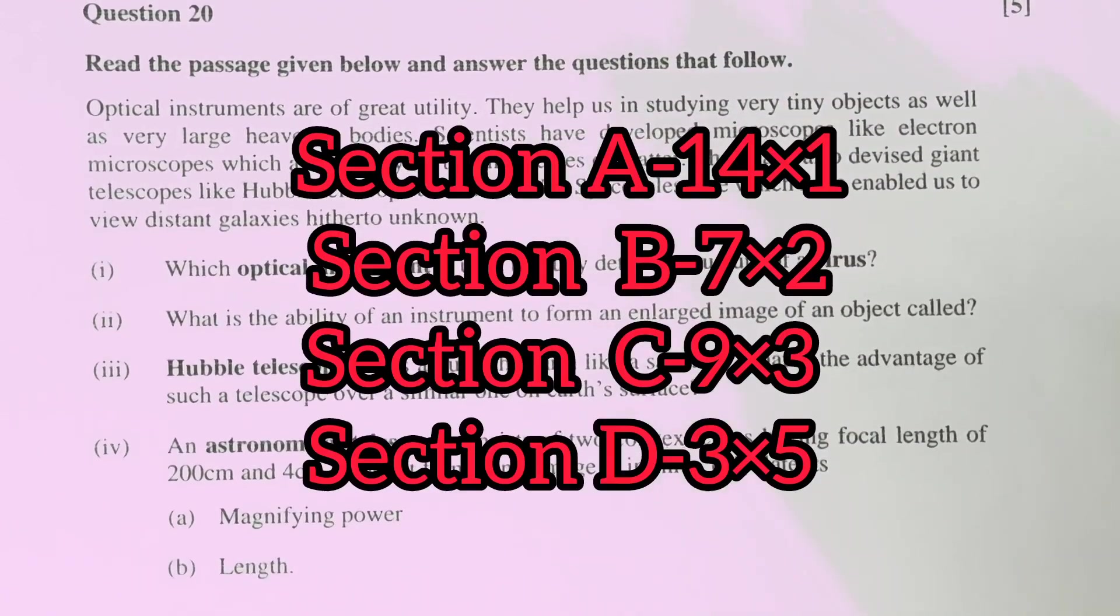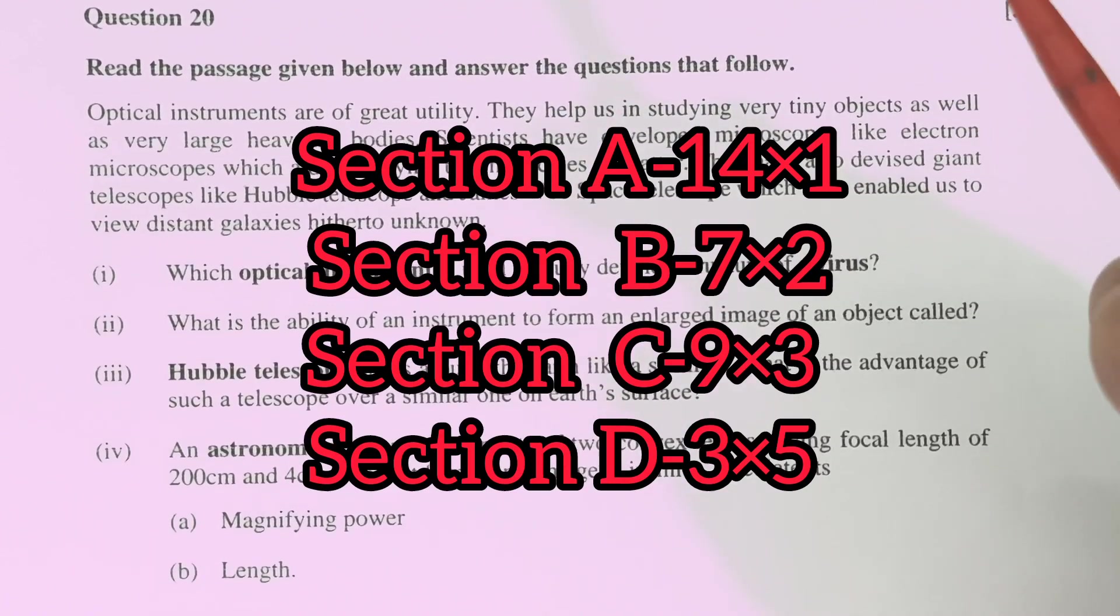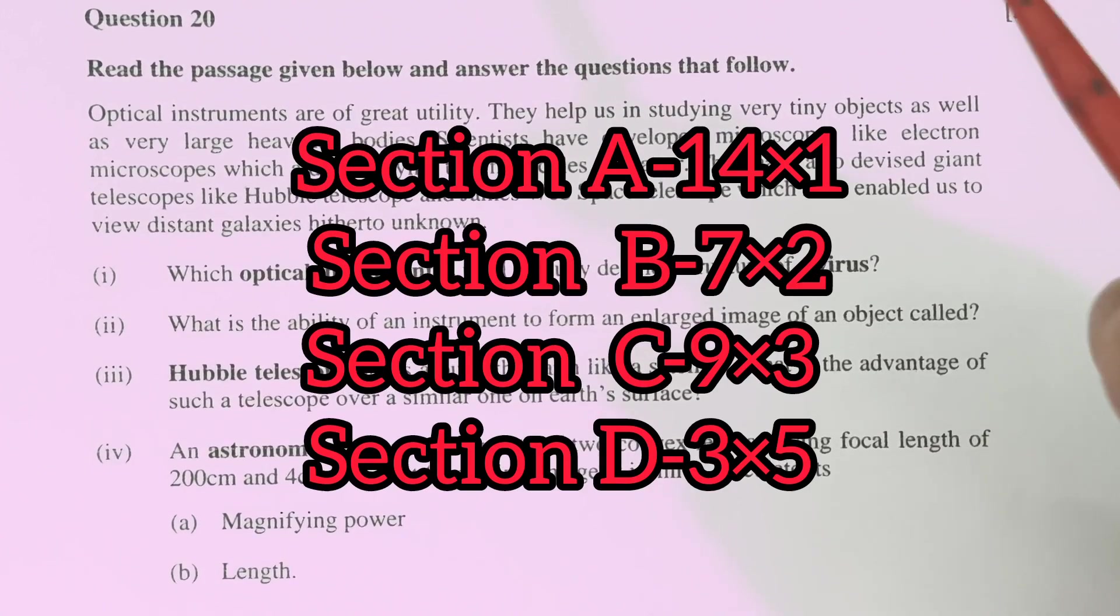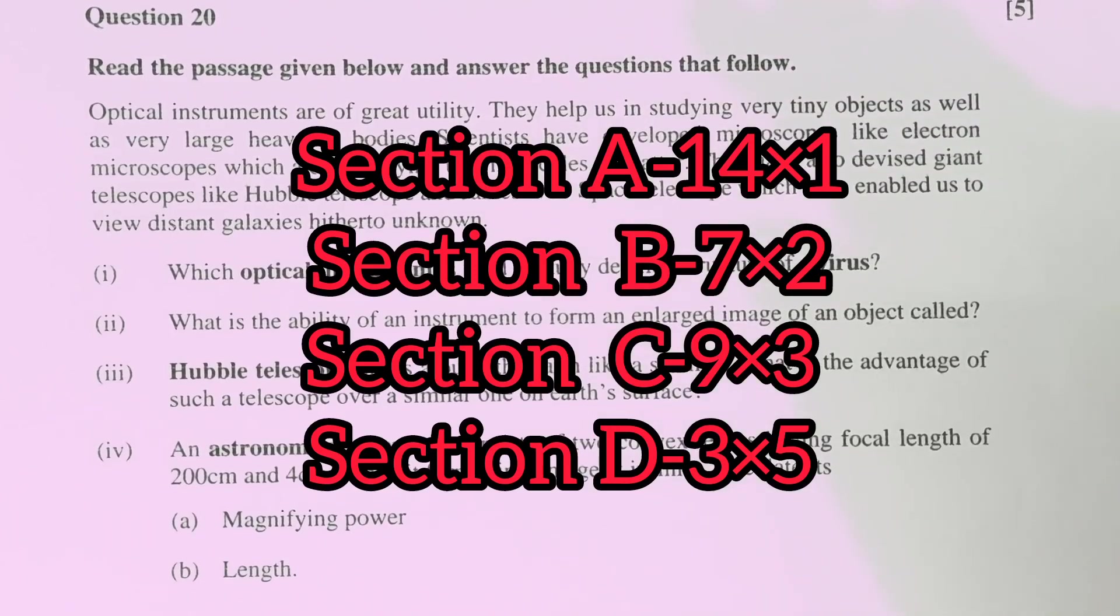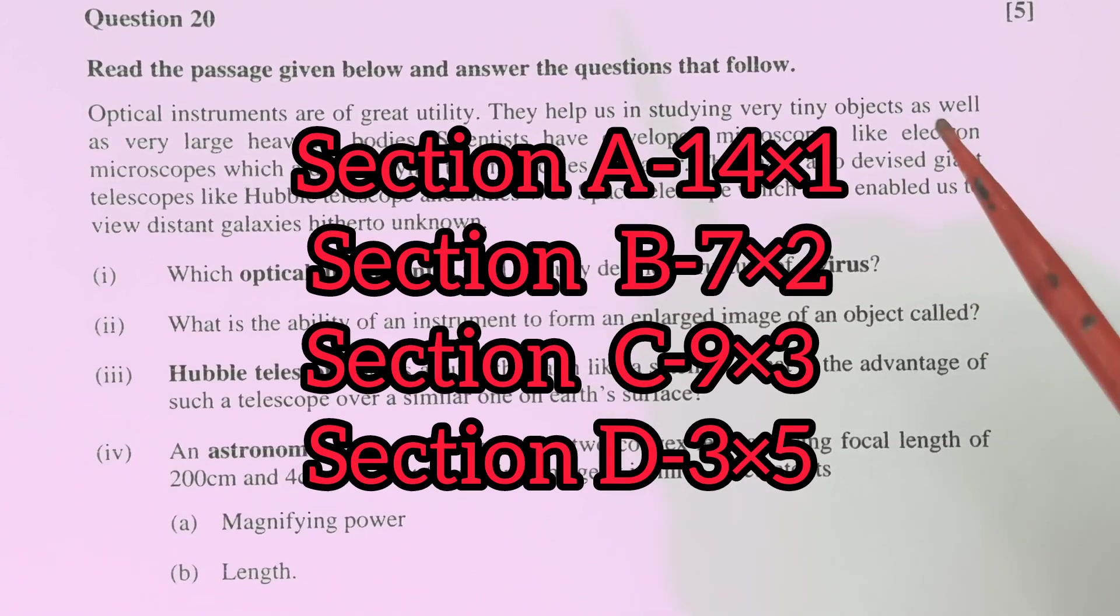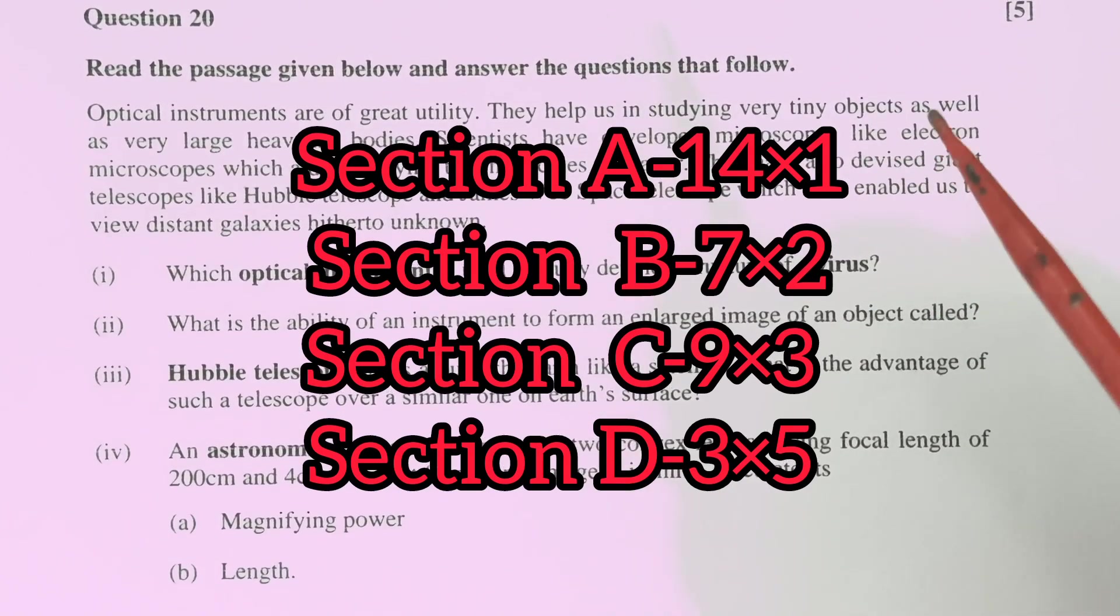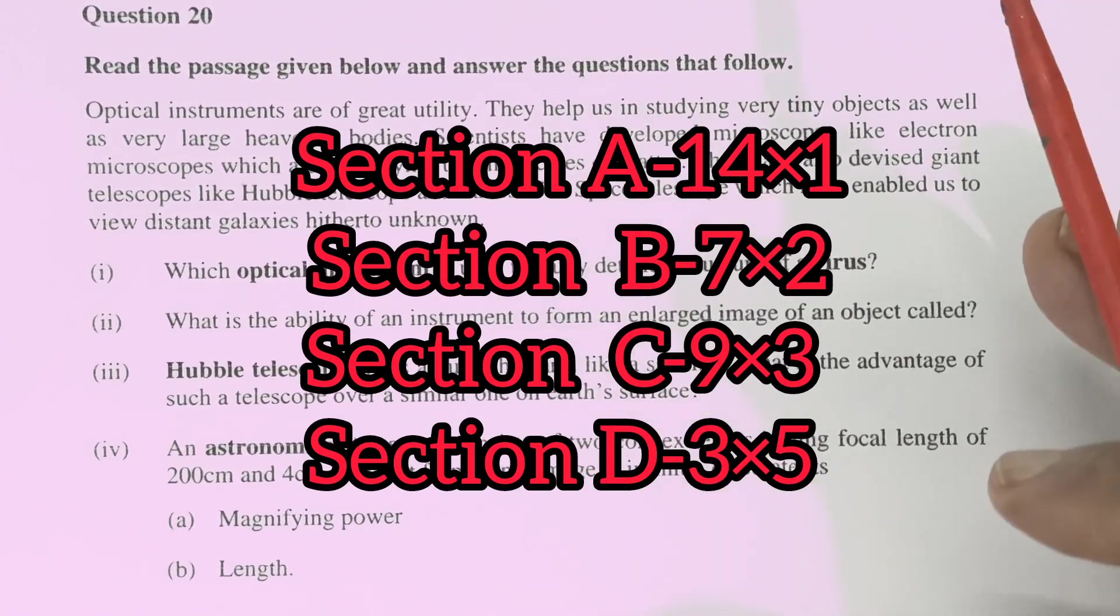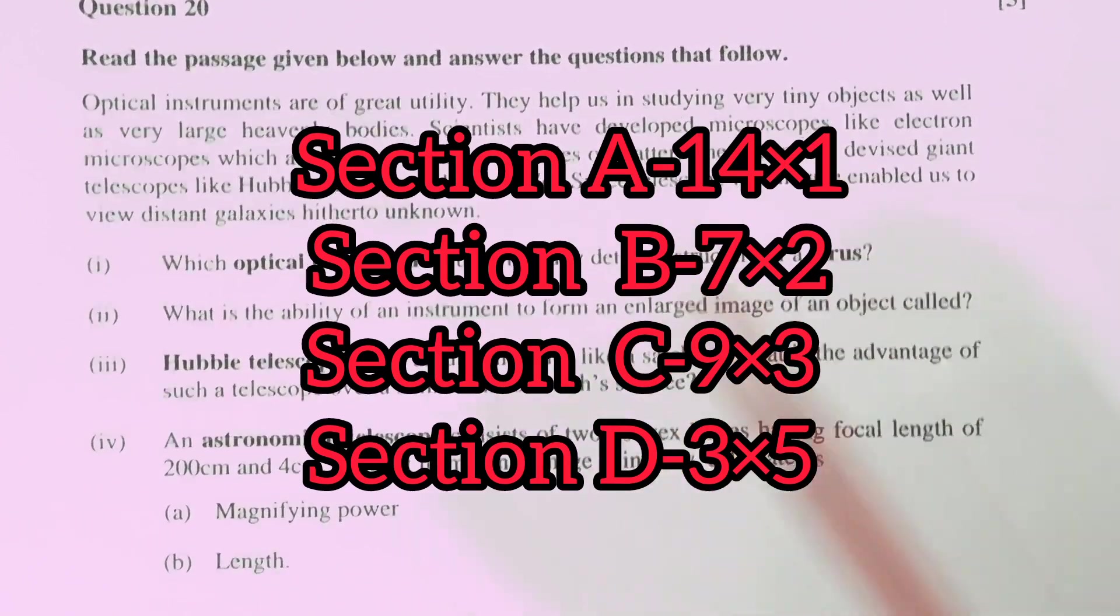In section A you will have 14 questions, 1 mark each. In section B you will have 14 marks total section. And each question, 7 questions, each question carry 2 marks. So it is again very short type answer. But in third section, section C, you will have total 27 marks allotted to the third section. And you will have 9 questions with 3 marks and these will be long answer type questions. And in section D, you will again have long answer type questions, 3 questions, each of 5 marks.